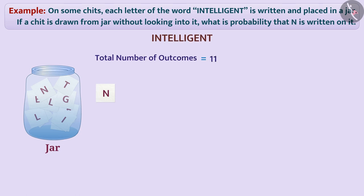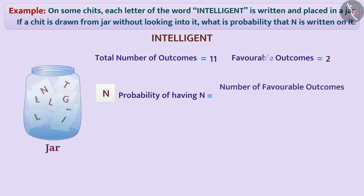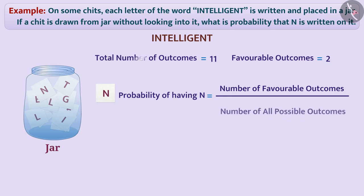This word has 2 n. So, there will be 2 chits on which n will be written. The chit drawn in this way, there are 2 favorable outcomes for n. Hence, the probability of having n on the drawn chit is the number of favorable outcomes of the event divided by number of all possible outcomes, which is equal to 2 by 11.